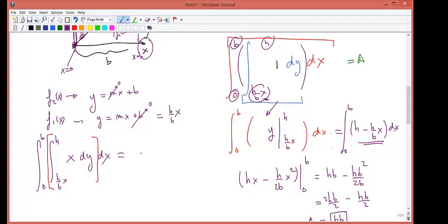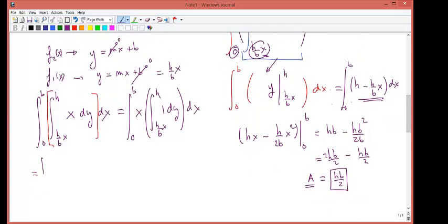This is therefore exactly the same as 0 to b, x has been kicked out, h over bx to h, dy dx. And we're back to 1 hop. Now we can do this easily, we just did it earlier. This will give us 0 to b, x, and this was y evaluated between h and h over bx, and again we carry all the dx.